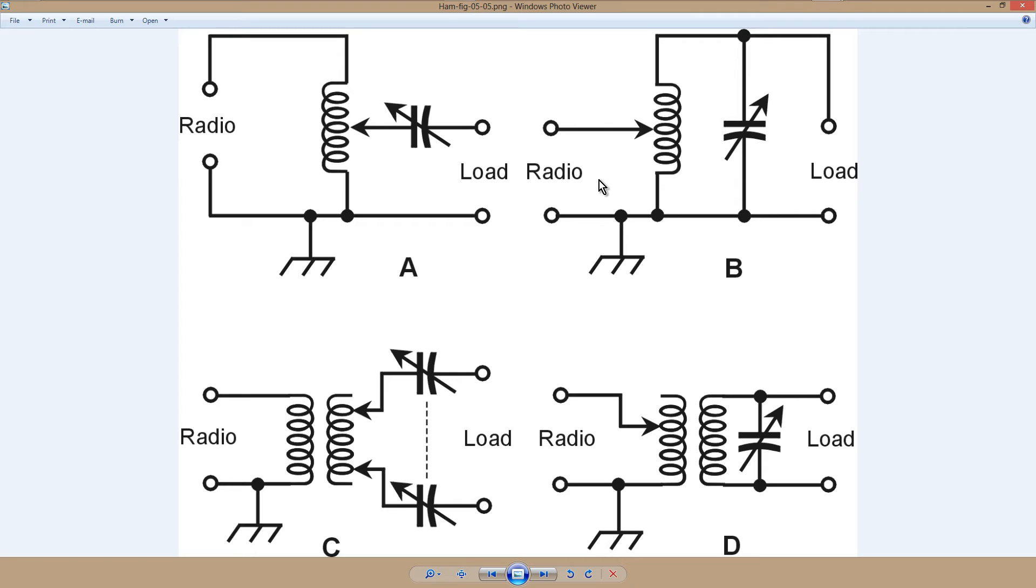If the impedance is high, and the resistive portion of the impedance turns out to be very high, you would place the radio at the tapped part of the coil. And when I say a tapped coil, I'm referring to a roller inductor, if you can possibly get one, because they're so much easier to adjust than inductors with fixed taps.